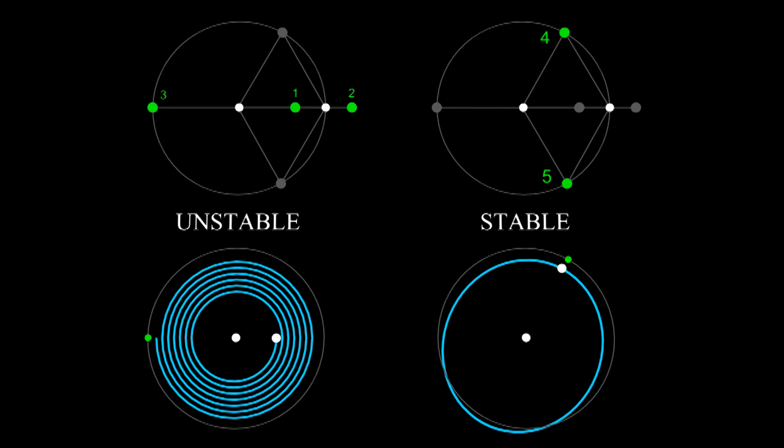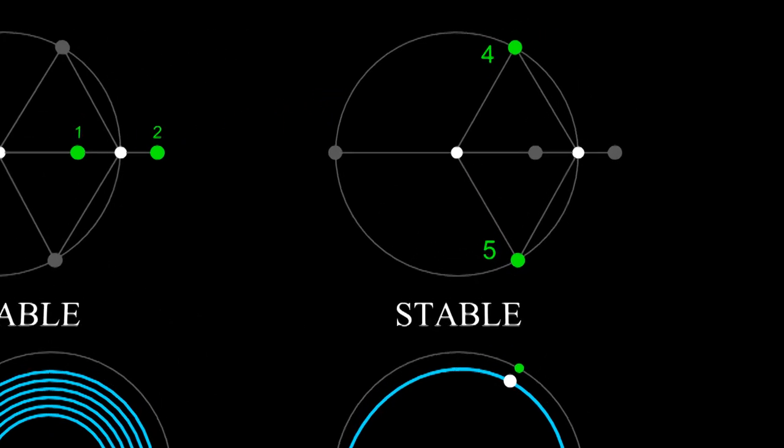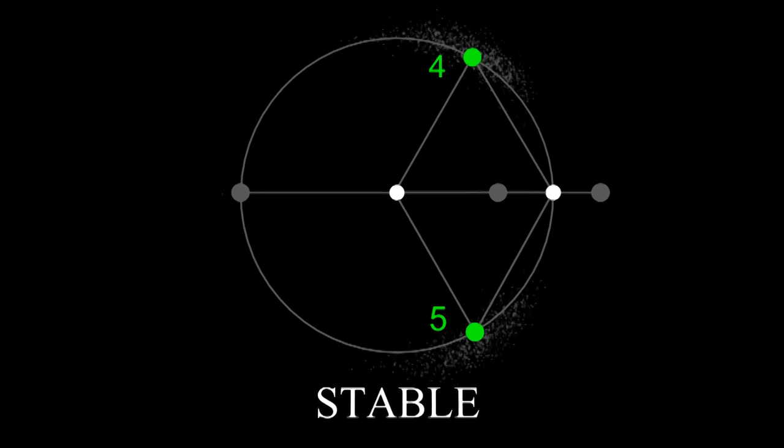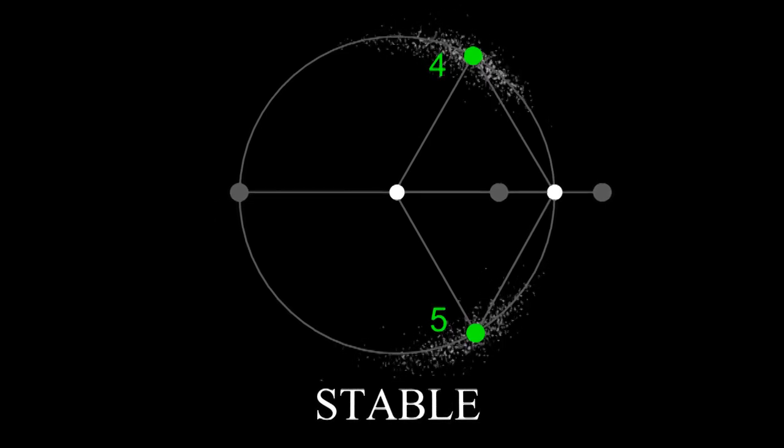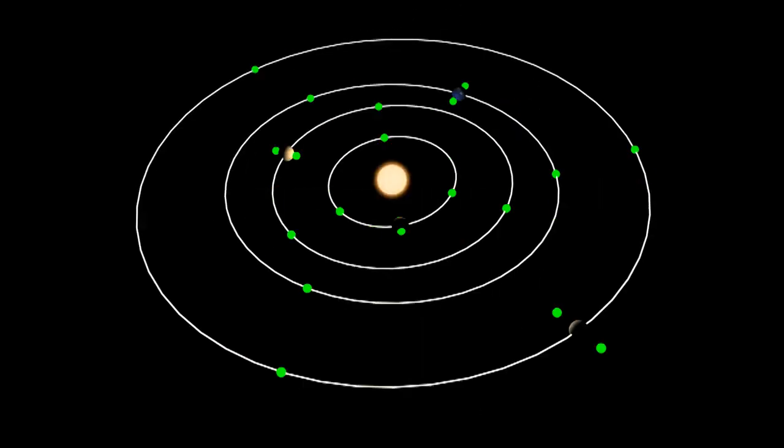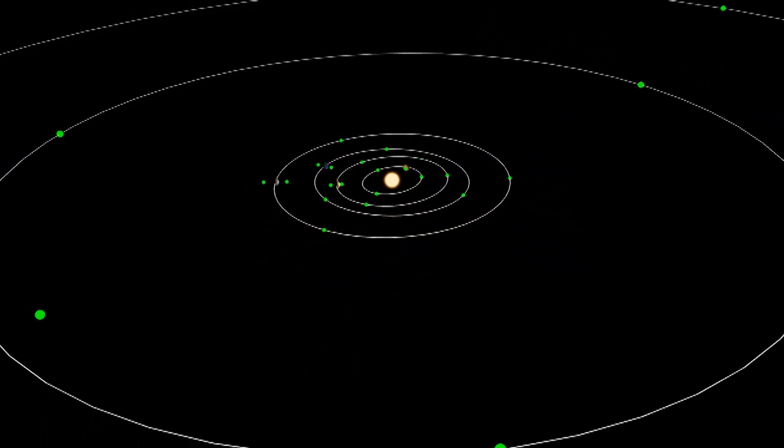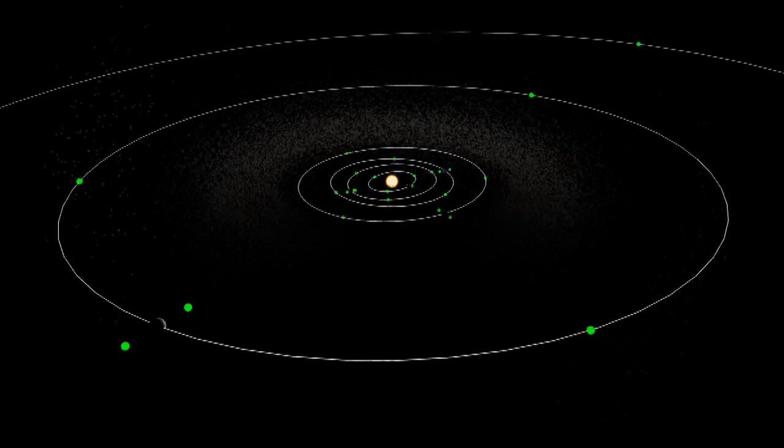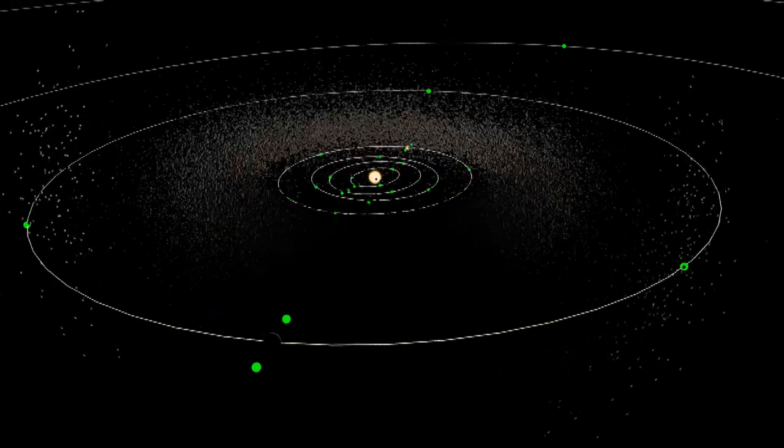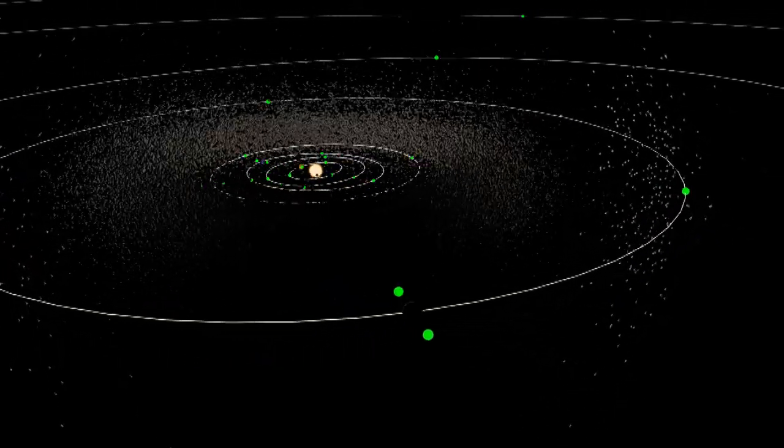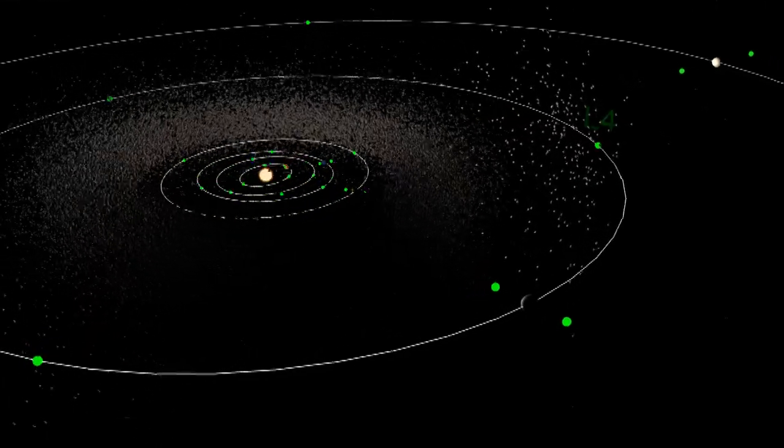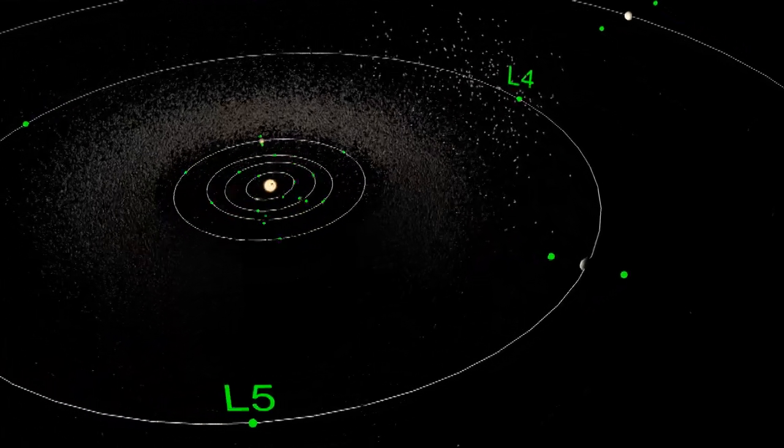Since orbits near the L4 L5 points are stable, objects naturally go there and stay there. All the major planets have their own Lagrange points and the most massive planet Jupiter has thousands of asteroids clustered around its L4 and L5 points.